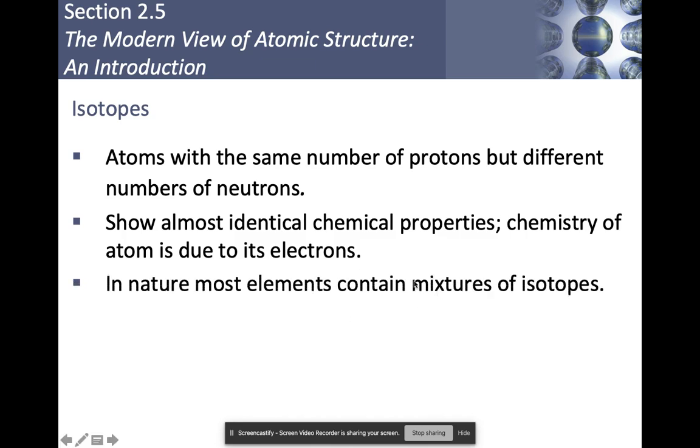Also in nature, most elements contain a mixture of all of the isotopes. So in reality, if I take a sample of oxygen, some of those oxygen molecules would be heavier than others because some of them would have more neutrons than others. But if I take an average of those, then I would end up getting the same number pretty much every single time.